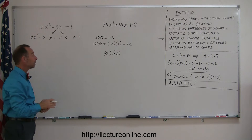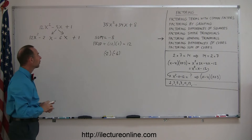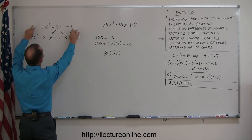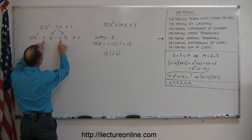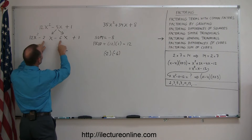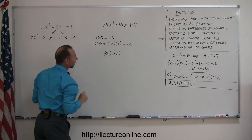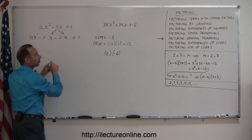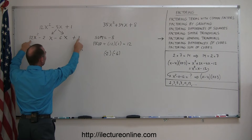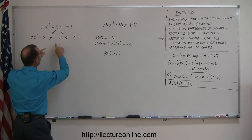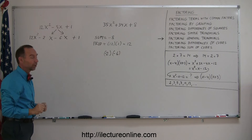Now we use the grouping technique to factor this. To revisit what we just did: we rewrote the trinomial as a polynomial with four terms. The coefficients are found by ensuring their sum equals negative 8, and their product equals the product of the two outer numbers — the leading coefficient and the constant. Multiplying those together gives 12, so the product of the two numbers must be 12 as well.